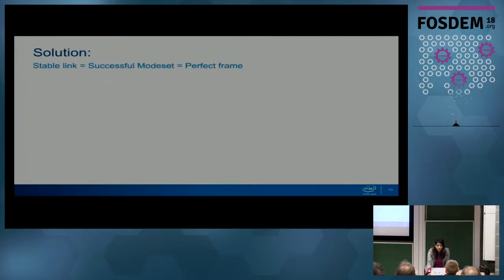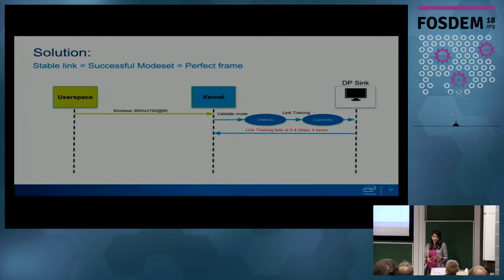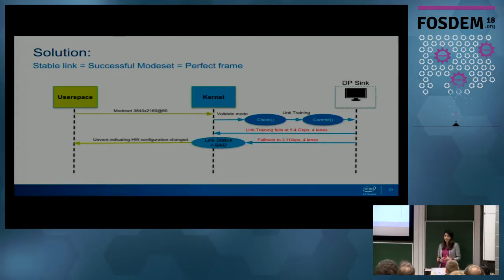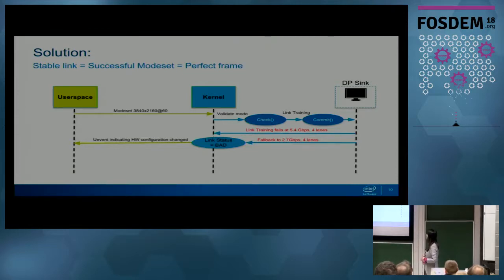So what did we do? How was this fixed? We introduced a new property for the DRM connector, which indicates the status of that specific link. At that point, if link training fails at 5.4 Gbps and four lanes, the kernel immediately falls back to the next lower link rate - HBR, which is 2.7 Gbps and four lanes - and tries again. It keeps doing that until link training succeeds.